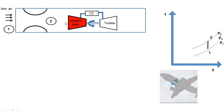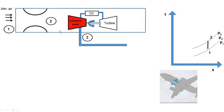After the diffuser, ram air is supplied into the main compressor. The function of the compressor is to increase pressure by reducing volume. The process in the compressor is two to three, known as the isentropic compression process — entropy is constant, pressure is increased, and temperature is also increased. Pressure increases from P2 to P3, and the vertical line is drawn from point 2 to point 3 on the T-S diagram.